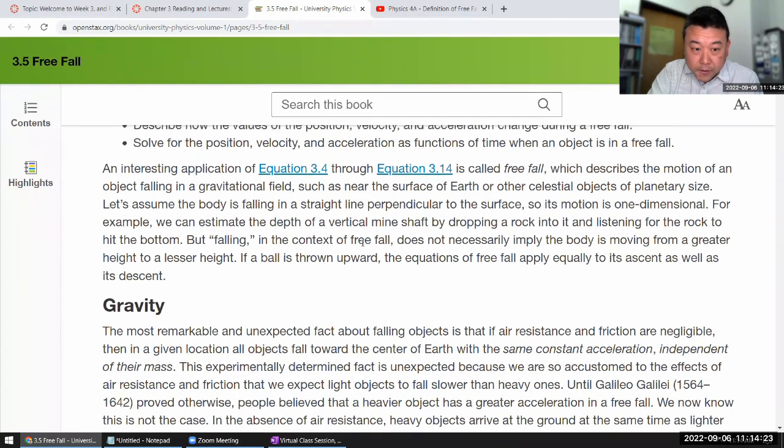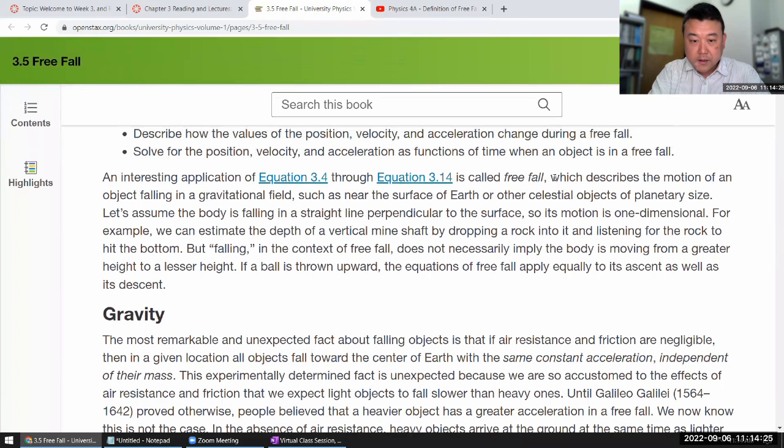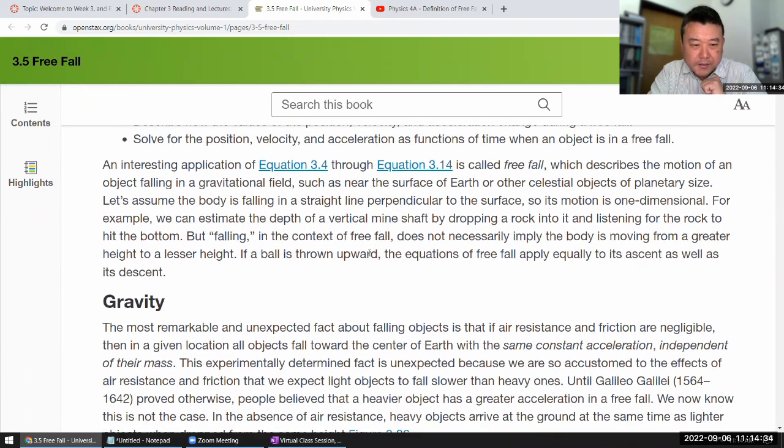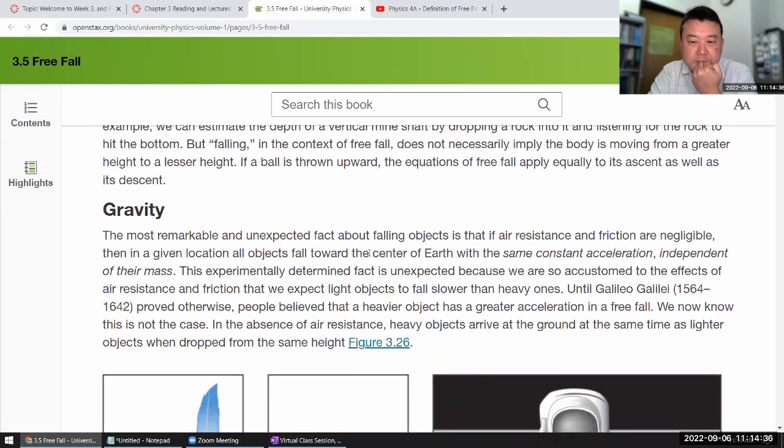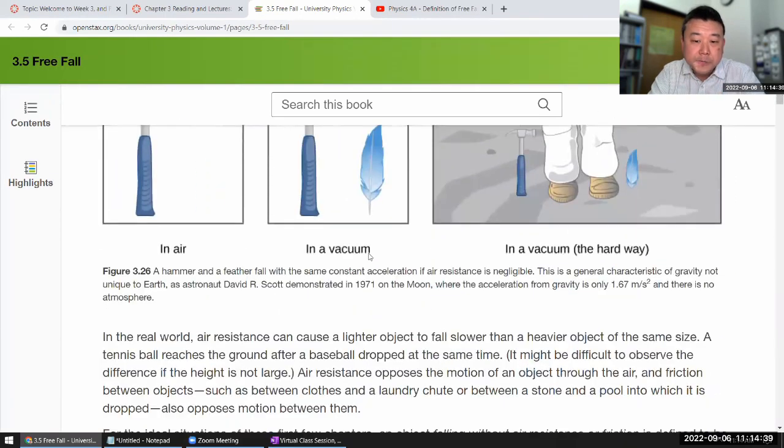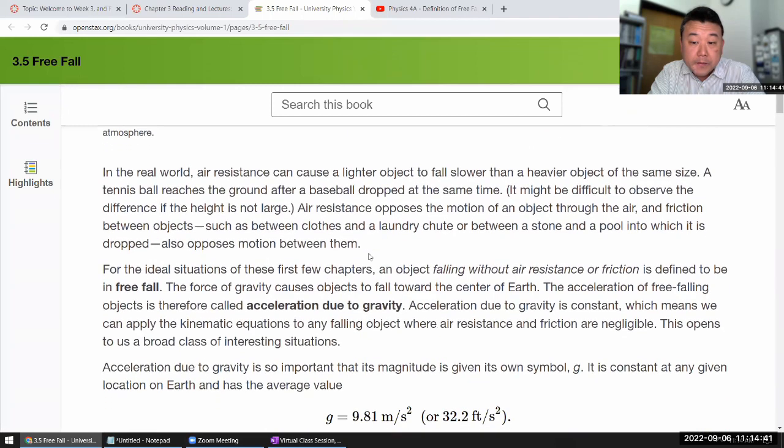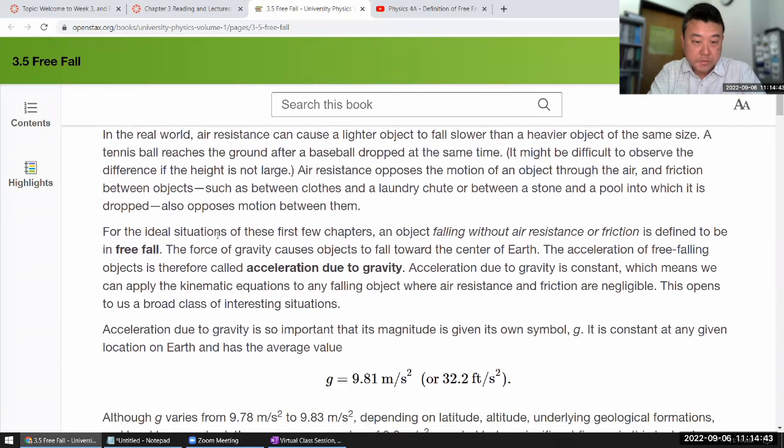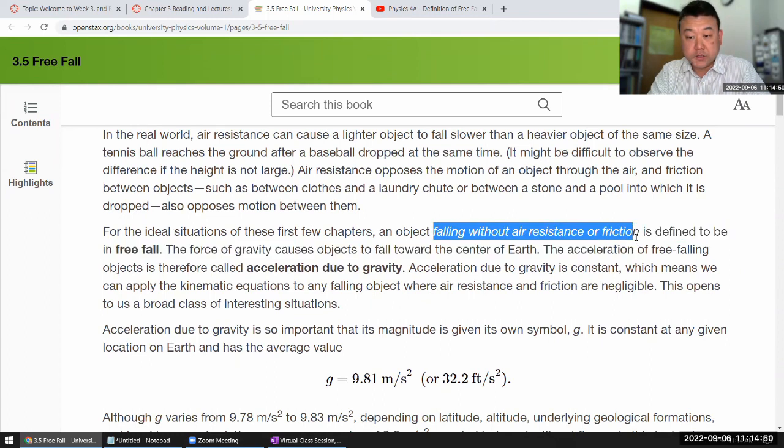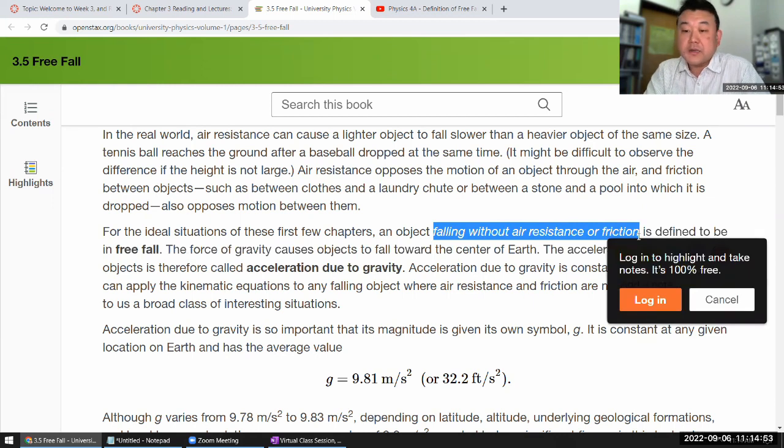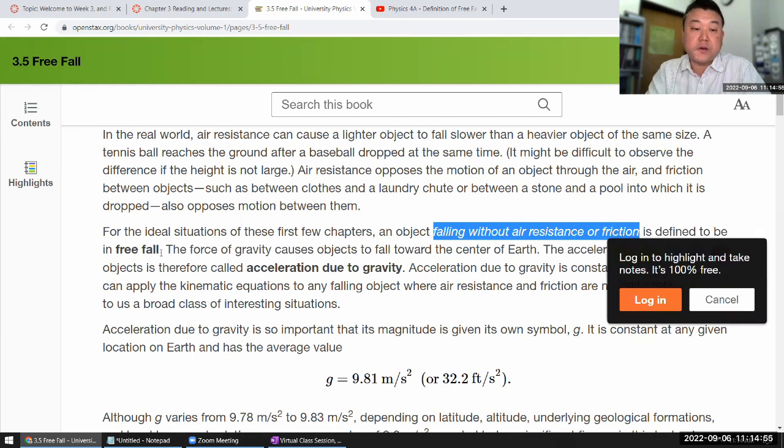The definition of freefall, which describes the motion of an object falling in a gravitational field. I don't think that's quite sufficient. Let me find it here. So this is the definition of freefall. An object falling without air resistance or friction or actually any other force is defined to be in freefall.